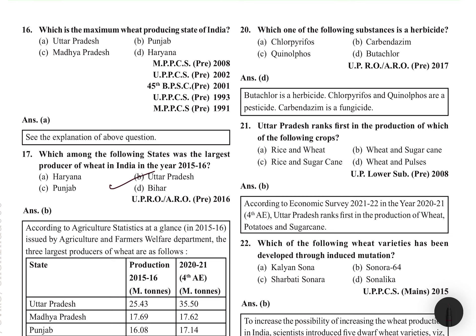MCQ: Which of the following is a herbicide? Butachlor is a herbicide. Chlorpyrifos and quinalphos are pesticides containing phosphorus. Carbendazim is a fungicide. So butachlor is the herbicide, chlorpyrifos/quinalphos are pesticides, and carbendazim is the fungicide.